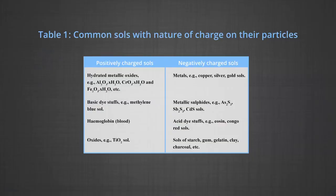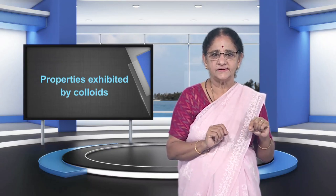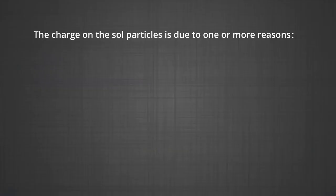A list of some common sols with the nature of the charge on the particle is given in the table. Hydrated metallic oxides, basic dyes, hemoglobin, and oxides of metals carry positive charge. Metals, metallic sulphides, acid dyes, and sols of starch, gelatin, etc. carry negative charge. The charge on the sol particles is due to one or more reasons: number one, electron capture by sol particles during electrodispersion of metals; number two, preferential adsorption of ions from solution; and number three, formation of electrical double layer.